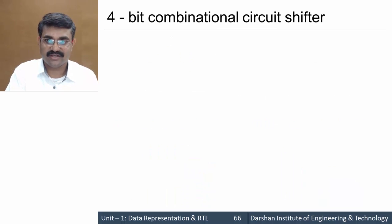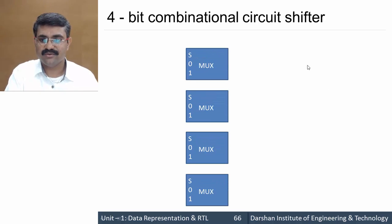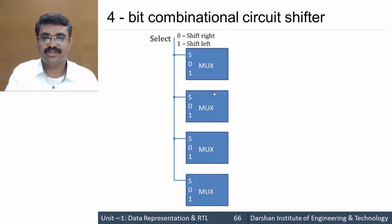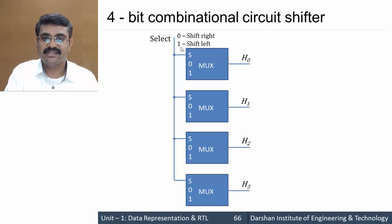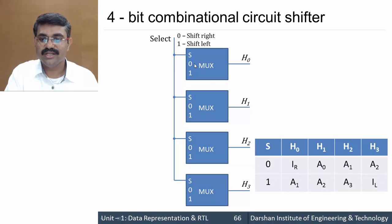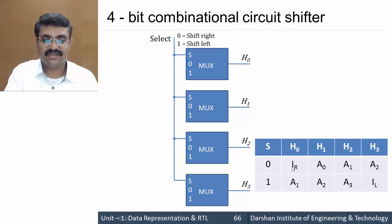For hardware implementation of the shifter circuit, we require four 2-to-1 multiplexers, each needing one select line. The select line determines the operation: select = 0 performs shift right, and select = 1 performs shift left. From the function table: when select = 0 (shift right), the serial input IR feeds the MSB, and a0, a1, a2 shift right. When select = 1 (shift left), a1, a2, a3 shift left and serial input IL feeds the LSB.